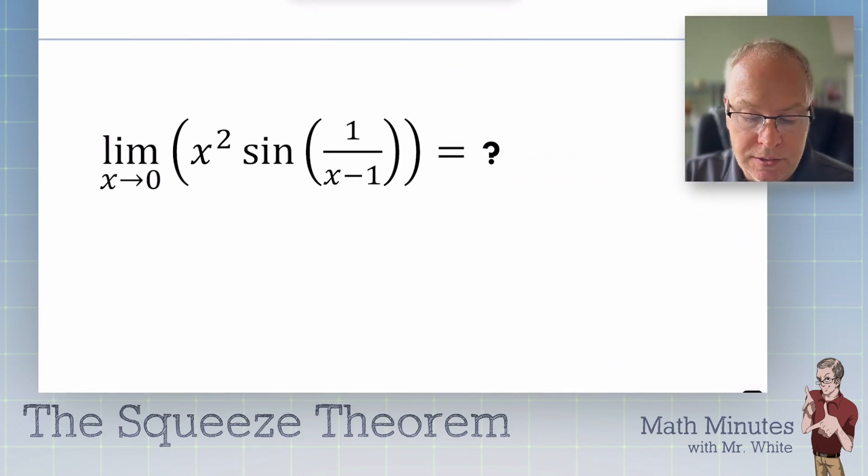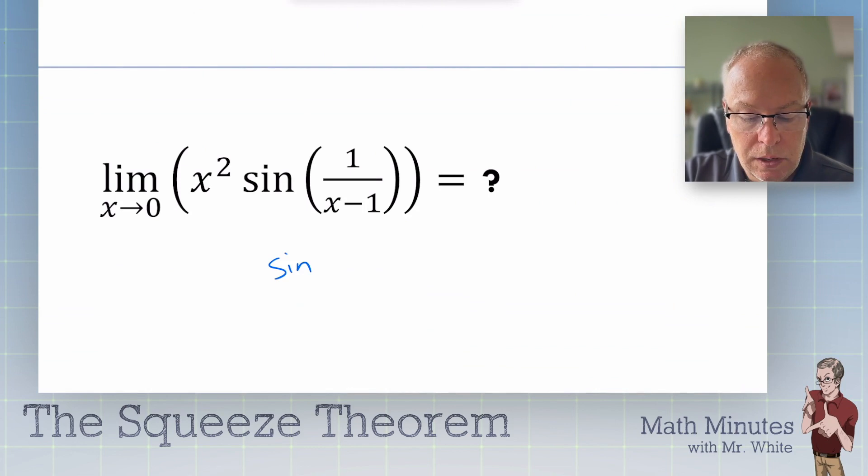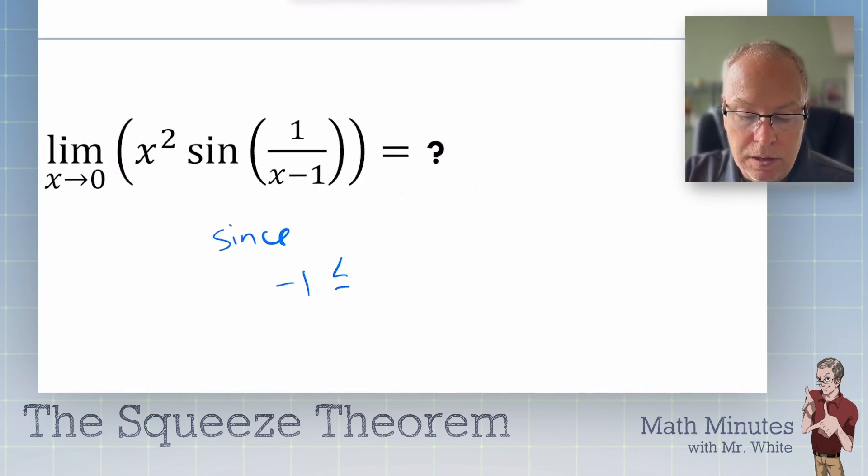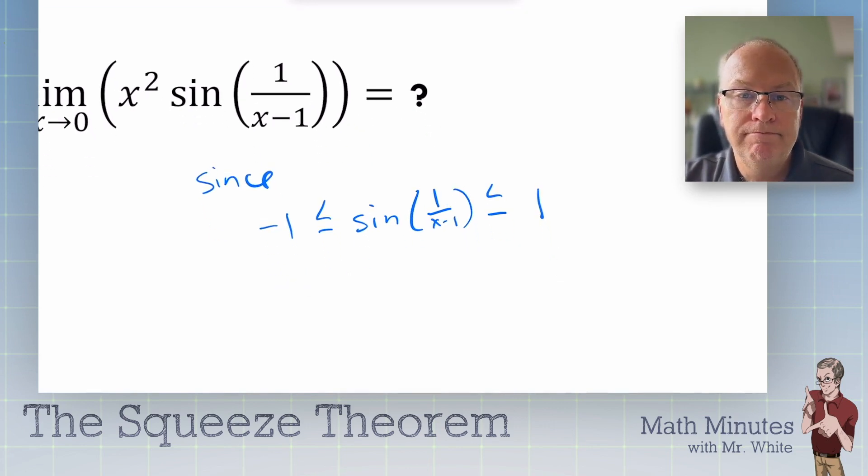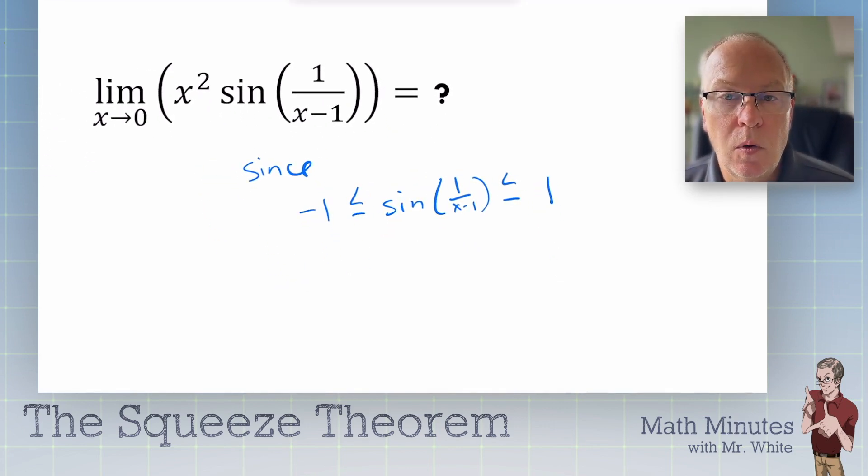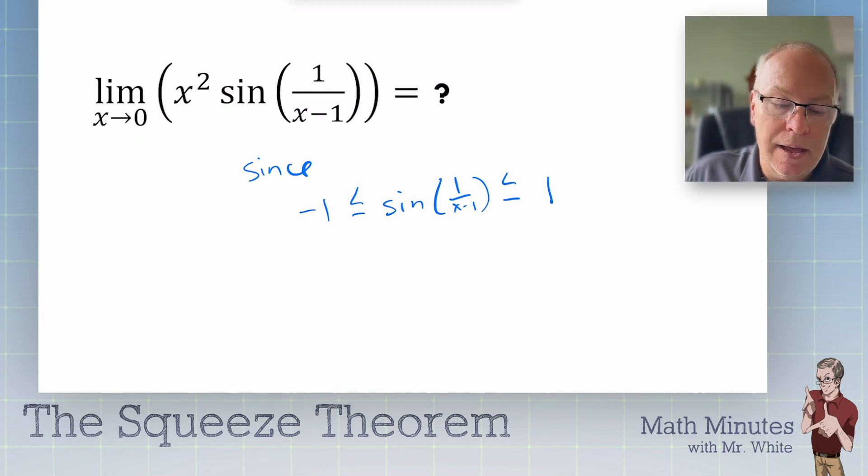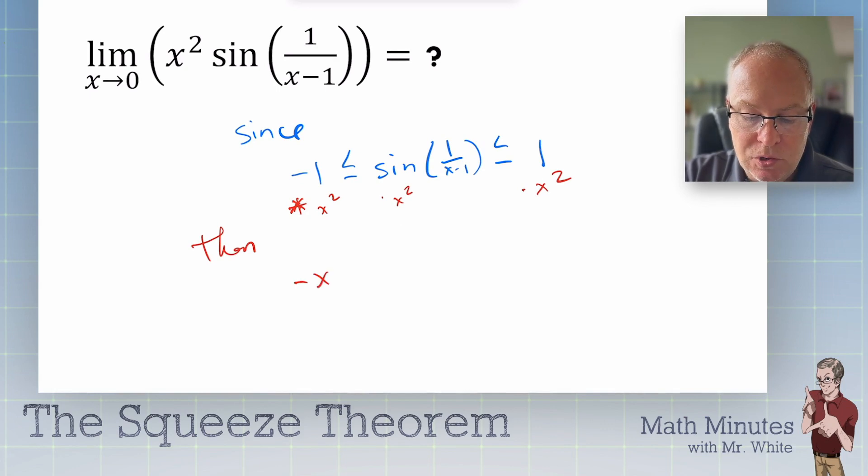Here's how it goes, folks. It says, since sine of 1 over x minus 1 is always between negative 1 and 1, just like we could write it as a compound inequality, write that like that. Then we could multiply each side, all three sides, by x squared. So we could multiply by x squared. Then negative x squared is less than or equal to x squared sine of 1 over x minus 1, less than or equal to x squared. You see what this says?